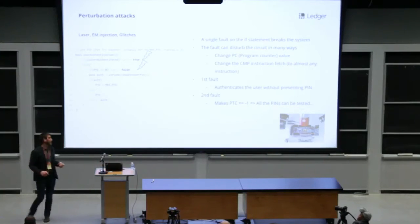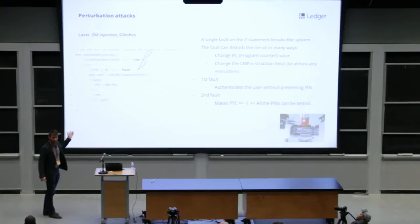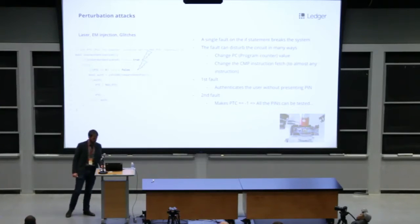Back to our pin verification. It's very easy to understand that a single fault on the first if or on the second if allows to break the system. On the first if, it's very easy. If the attacker is able to skip the comparison, it will be authenticated without presenting any pin. And the second if is quite funny. When the attacker skips this comparison, the pin trial counter will be updated to minus one. And then it will be able to try as much pins as you want, because minus one, minus two, minus three, it's never zero. So it can break the system. So that's why it's a bad way to implement the pin verification.